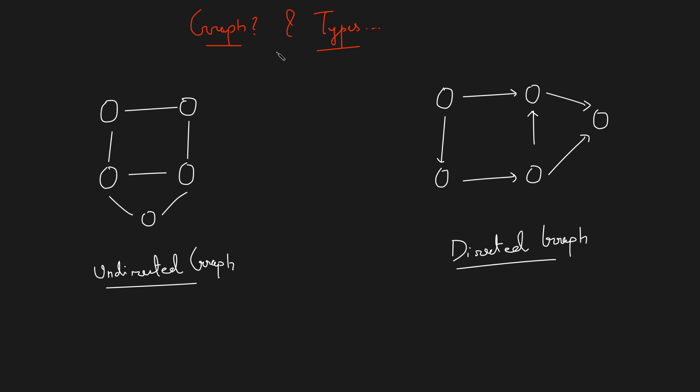In today's video we are going to discuss what is a graph and what are the types of graphs. This video will be the first video of the entire graph series. Before moving on to the code part and the algorithmic part, we actually have to know what graphs are, what different kinds of graphs we can have, and some important terms related to them. So what is a graph?